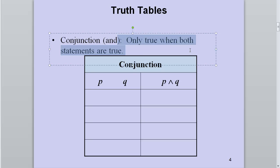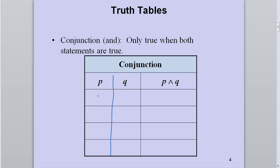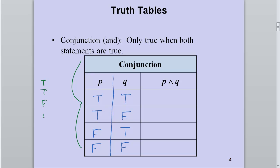For the conjunction, it is only true when both statements are true — if you have a false, you're done. We set up p and q with the structure: true, true, false, false for p, and alternating true, false, true, false for q. Follow this structure going forward. Now completing the table: both true gives true; one false gives false; one false gives false; at least one false gives false.